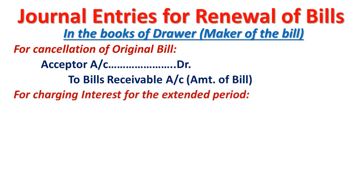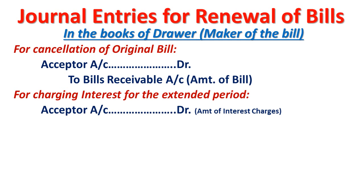The second entry is for charging interest for the extended period. Bear in mind this is income for the drawer, that is the maker of the bill, therefore it should be credited. The entry will be: Acceptor Account debit to Interest Account with the amount of interest charged.